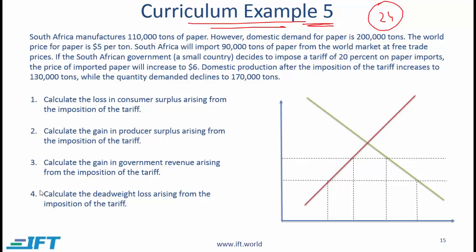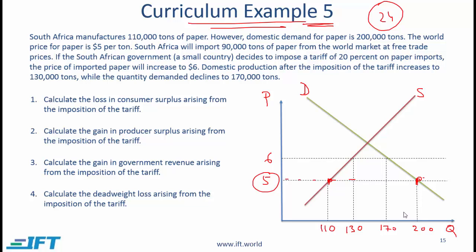Before looking at the solution, try to solve this problem yourself. The first step is to draw the diagram: domestic demand, domestic supply, price on the y-axis, quantity on the x-axis. With free trade, the global price is 5. Domestic demand is 200,000 and quantity supplied is 110,000. When a 20% tariff is imposed, the price rises to 6, domestic supply increases to 130,000, and demand falls from 200,000 to 170,000. The question provides all the data needed.